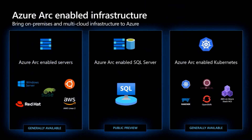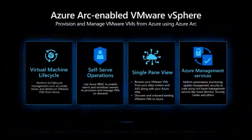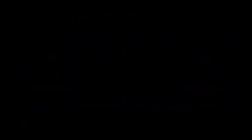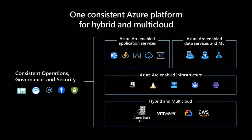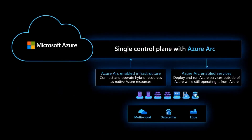When we talk about infrastructure: there's Arc-enabled servers, Arc-enabled Kubernetes, a special Arc-enabled SQL Server that gives you security recommendations, management for Azure Stack HCI, and Arc-enabled VMware vSphere. With VMware, you can do VM lifecycle management and self-service directly from the Azure portal on your VMware environment running basically anywhere. This gives IT admins, operations people, and developers a consistent experience for doing operations, governance, and security — regardless of whether services are running in Azure or outside of Azure.